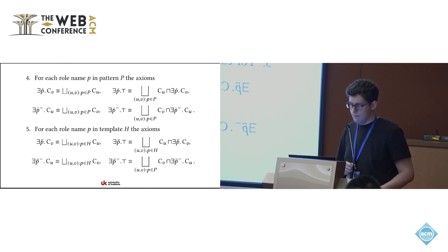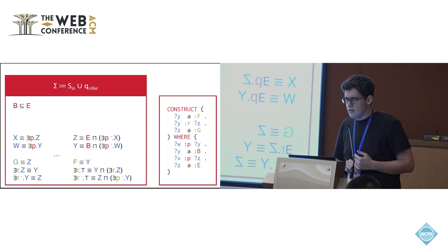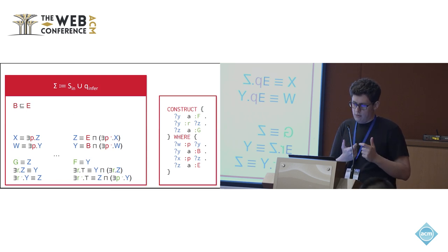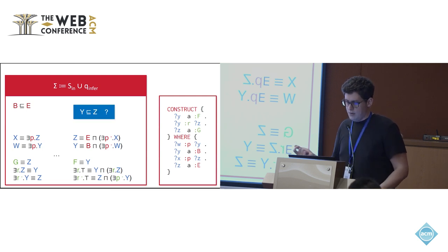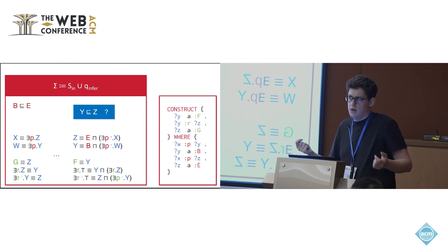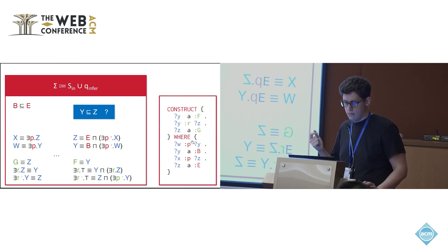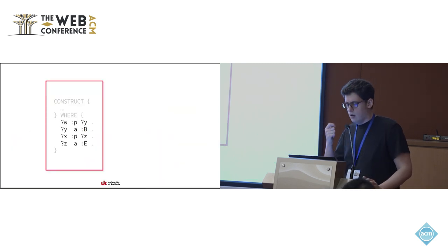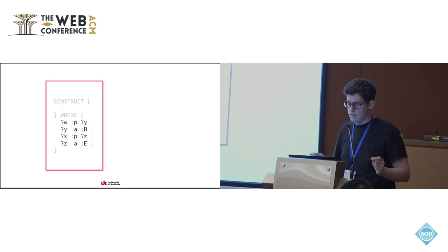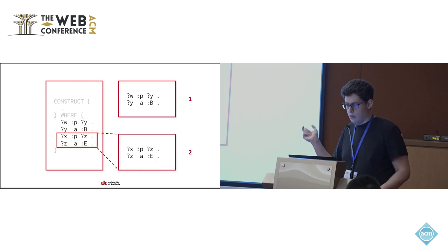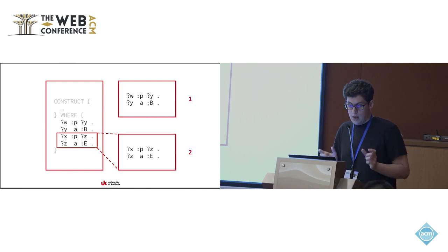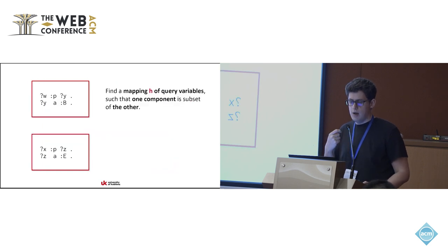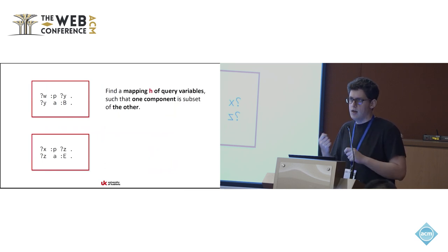We care about subsumption relationships among variables, as they connect input and output. In this particular case, Y subsumed by Z is not already entailed. So another step we take is to look at the WHERE part and decompose it into components that do not share variables. In this example we have two components: one including only W and Y, and one including only X and Z. As shown in the paper, if you find a mapping H between variables in one component to another such that one component is syntactically a subset of the other, this implies a subsumption between the respective variable concepts.